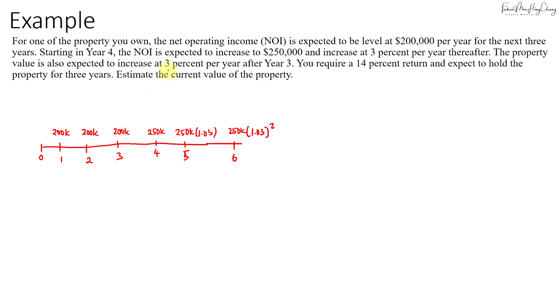If it's going to grow at this rate, we can calculate the perpetuity value using the direct cap method. The property value is also expected to increase at 3% per year after year three. You require a 14% return and expect to hold the property for three years. Estimate the current value of the property at time zero.